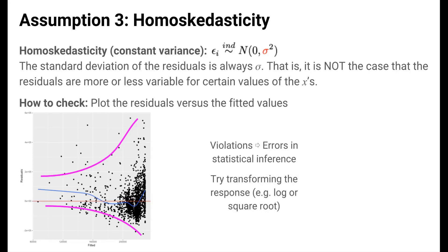As with the independence assumption, violations of this assumption lead to errors in statistical inference. We can try to fix this by transforming the response variable, say by taking the logarithm. This would bring the outliers more towards the middle, which could reduce the variance of the residuals towards the right of the plot.